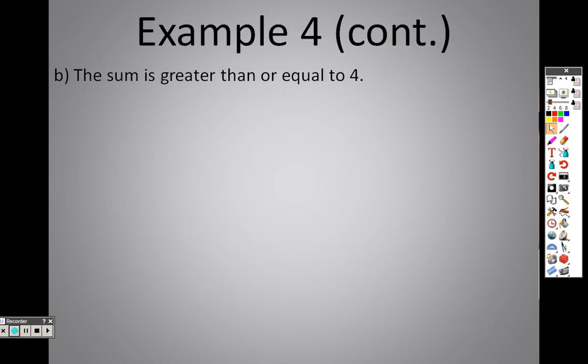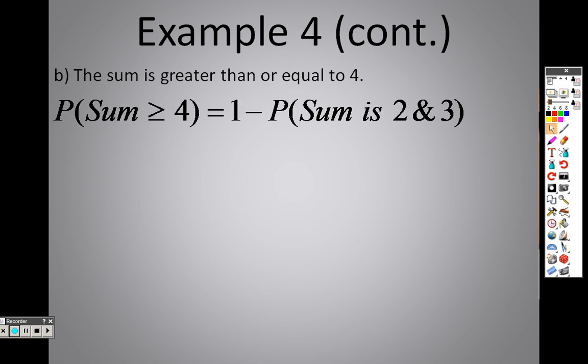To find the sum that is greater than or equal to 4, keep this in mind, greater than or equal to 4. That means I'm finding the sum of 4, 5, 6, 7, 8, 9, 10, 11, and 12. That's 9 different sums I have to find and add them all together. Or, I could do the reverse. I can find the other sums. Instead of it being greater than or equal to 4, there's only 2 sums that I need to find. The sum of 2 and 3.